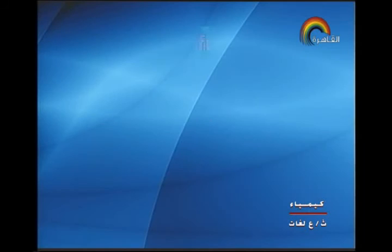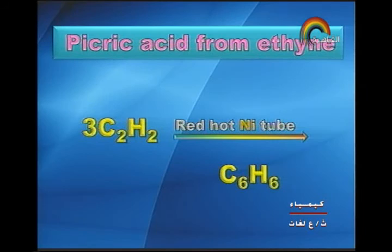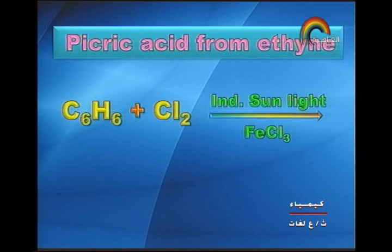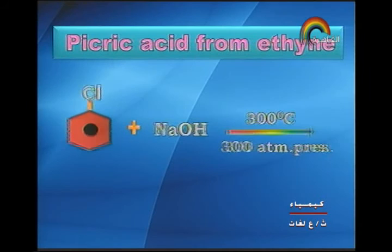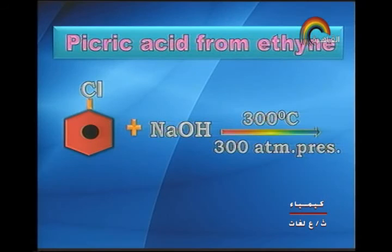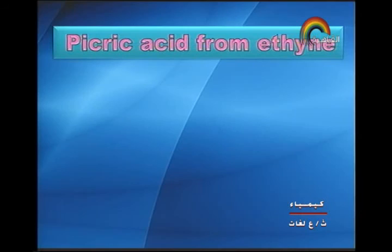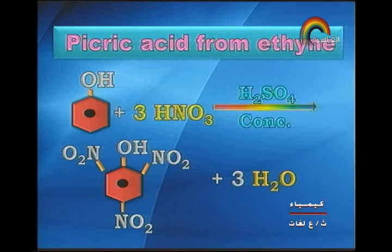Next type of question: show by balanced chemical equation how you can obtain picric acid from ethane. Ethane on a red hot nickel tube gives benzene. Benzene with chlorine in the presence of iron(III) chloride gives chlorobenzene and HCl. Chlorobenzene with alkaline hydrolysis (NaOH at 300°C, 300 atm) gives phenol and sodium chloride. Then phenol on nitration with concentrated nitric acid in the presence of concentrated sulfuric acid gives picric acid (2,4,6-trinitrophenol) and three molecules of water.